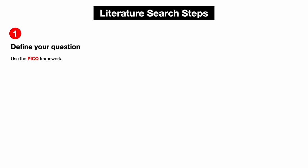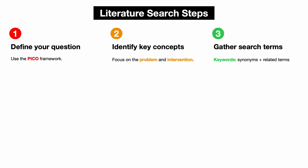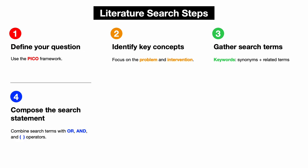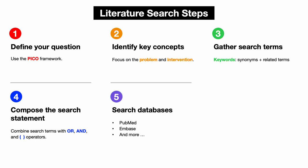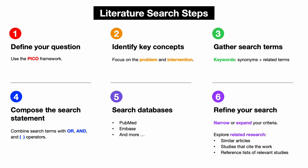Let's wrap up by reviewing the key steps for a successful literature search. Begin with a clear research question guided by the PICO framework. Identify the key concepts, focusing on the problem and intervention. Gather search terms, including synonyms and related terms for each concept. Compose your search statement by combining these terms with Boolean operators to create logical relationships. Search relevant article databases using your search statement, selecting those that best fit your topic. Finally, refine your search to capture the most relevant information — this may involve narrowing or expanding your criteria, or exploring related research through similar articles, studies that cite the work, and reference lists of relevant studies. Thank you for following along; these strategies should help make your literature searches more efficient and effective.